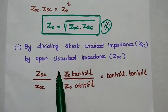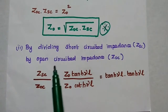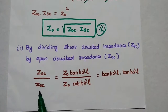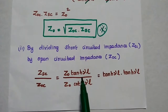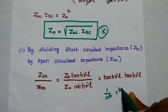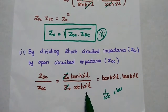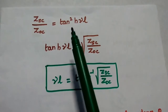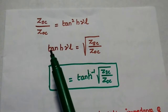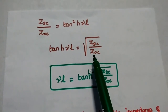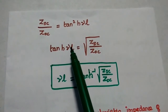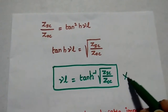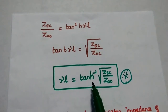The second relation is obtained by division. Dividing the short circuited impedance by the open circuited impedance, Z_SC over Z_OC equals Z0·tanh(γL) divided by Z0·coth(γL). Since 1 over coth equals tanh, we can write this as tanh squared(γL). So the ratio Z_SC over Z_OC equals tanh squared(γL). Taking square root on both sides, tanh(γL) equals square root of Z_SC over Z_OC. From this, we can obtain the propagation constant gamma along the total length L, which equals tanh inverse of the square root of Z_SC divided by Z_OC.